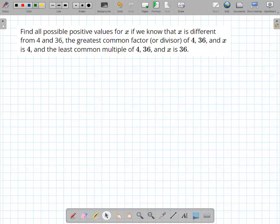We're going to apply what we know about greatest common factors and least common multiples. So we want to find all positive values for x if we know that x is different from 4 and 36, the greatest common factor of 4, 36, and x is 4, and the least common multiple of 4, 36, and x is 36.